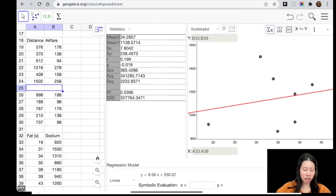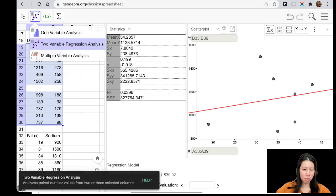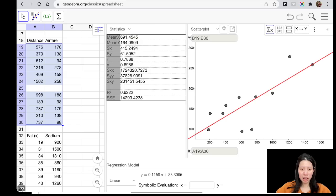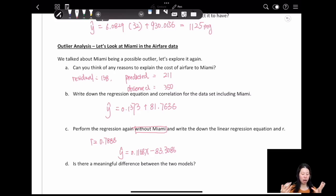Two-variable regression model - that's it. See, we were missing this dot, the Miami dot, and now we have our new statistics. Our new r equals 0.788, and our regression model is y-hat equals 0.1168x plus 183.086.